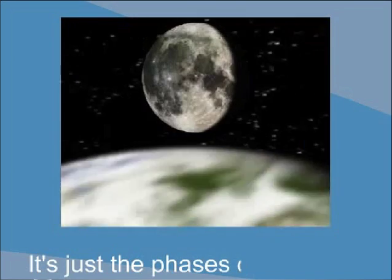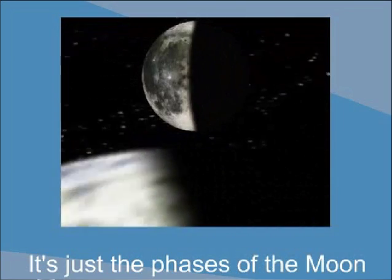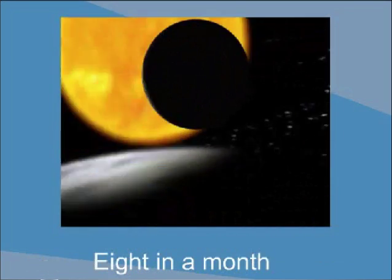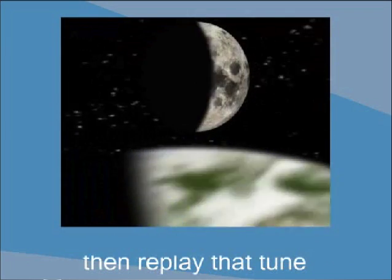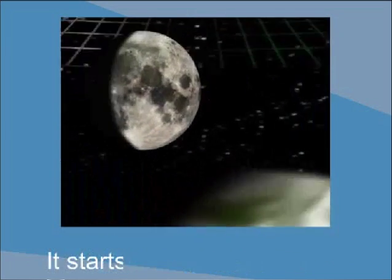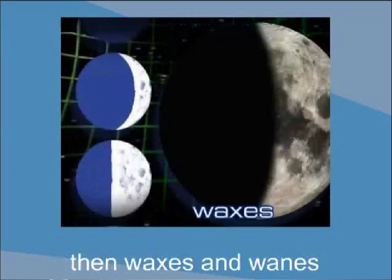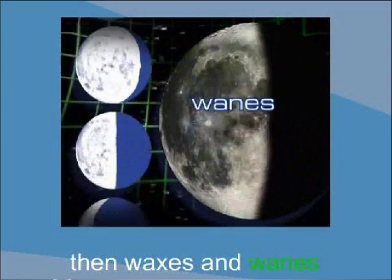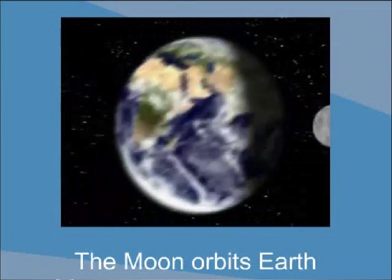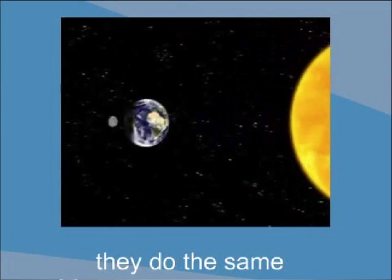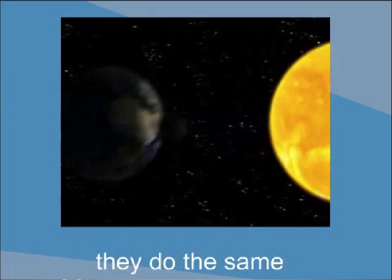It's just the phases of the moon, eight in the month, then replay that tune. It starts with a new moon, then waxes and wanes. The moon orbits Earth, and around the sun they do the same. So as Earth...